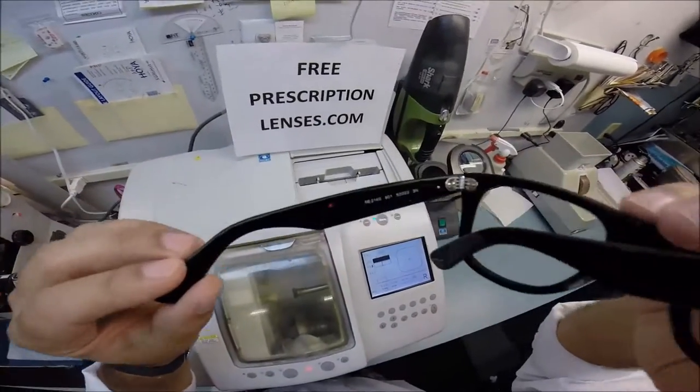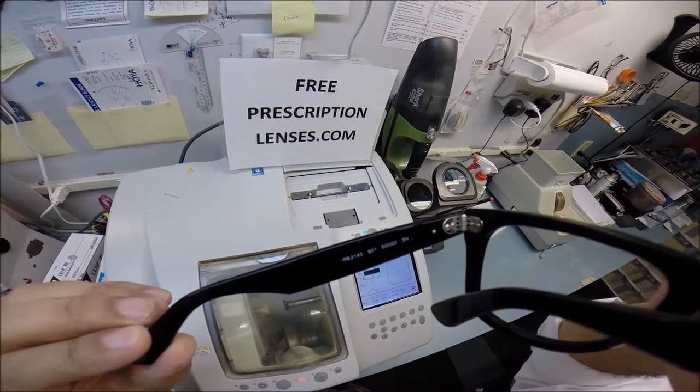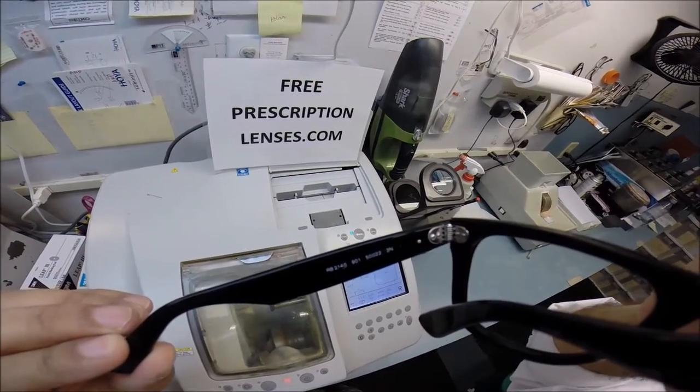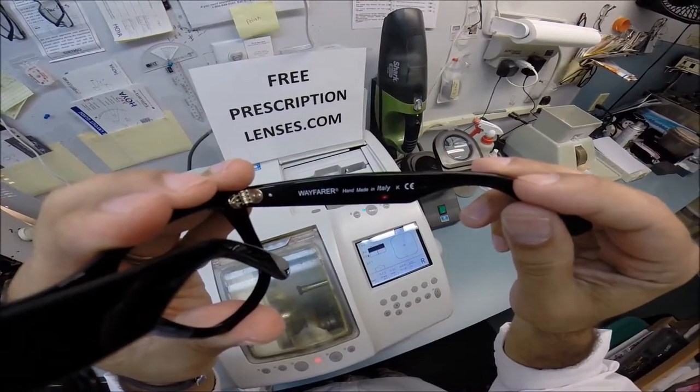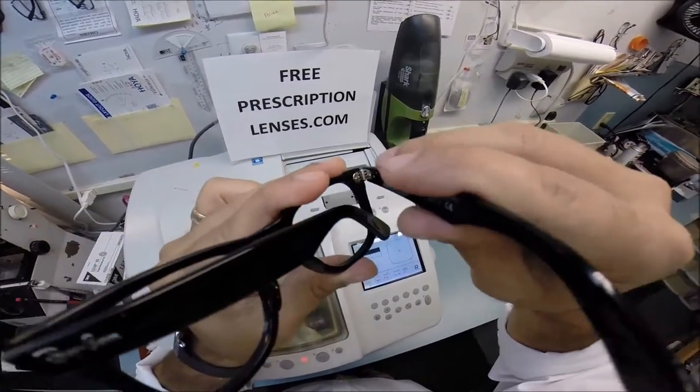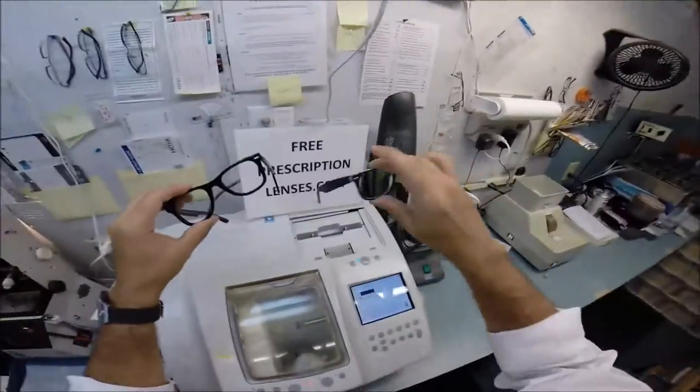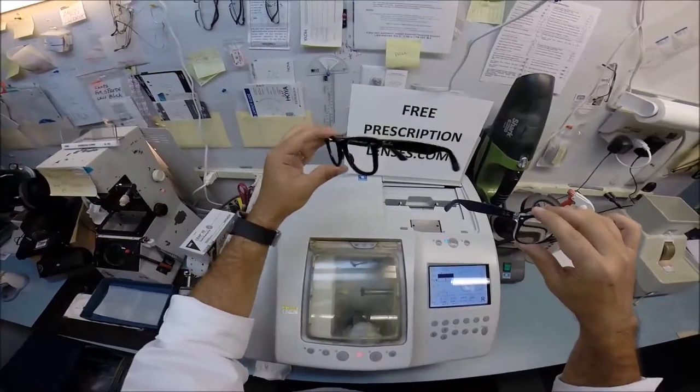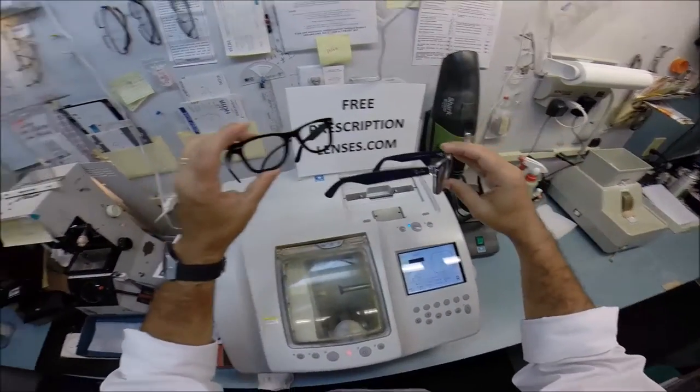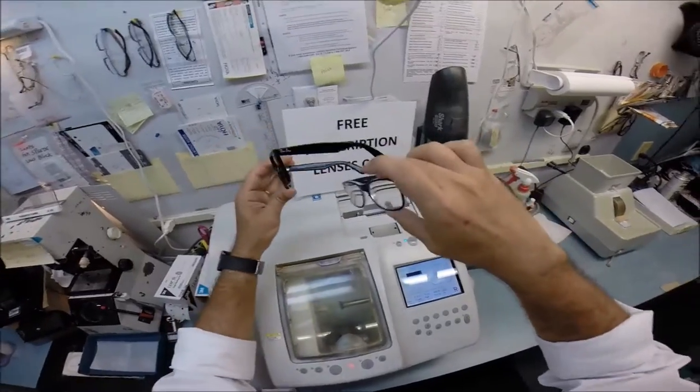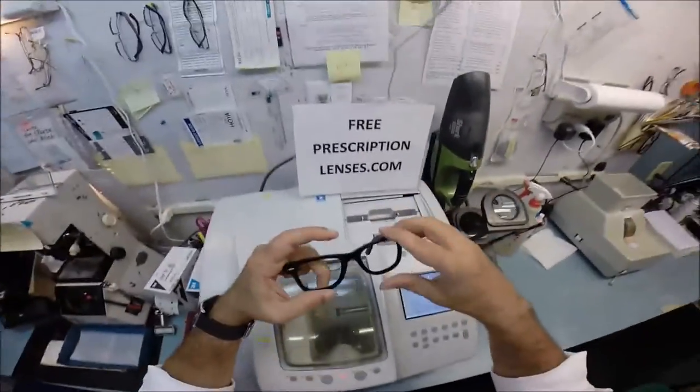Again, I'll be working on the Ray-Ban 2140, the original Wayfarer color 901, the classic shiny black, and the 50mm size. And this is the original made in Italy with the triple barrel hinges. It's just the classic look. Of course, I'm wearing the new Wayfarer. This was originally made in the 50s. This one came out in 1992. This is the Ray-Ban brand that you will never see them change. So I'm going to put mine back on so I can see what I'm doing.